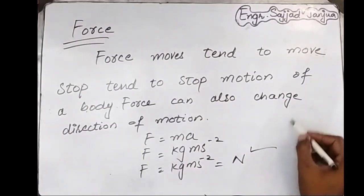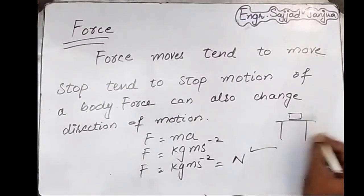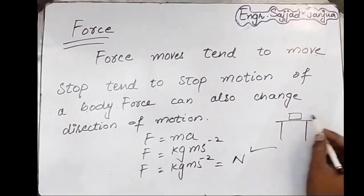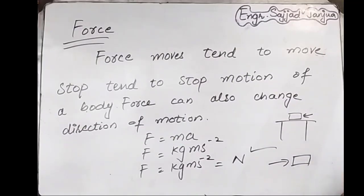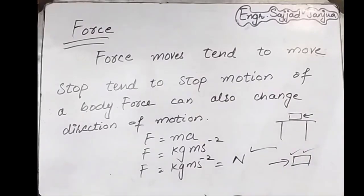To understand force, consider an example: we have a table and a book placed on it. The book will not change its position unless we apply any force on it. And if we have a body in motion and we want to stop it, we have to apply some force against it. This agent applied on a body to stop it is called force.